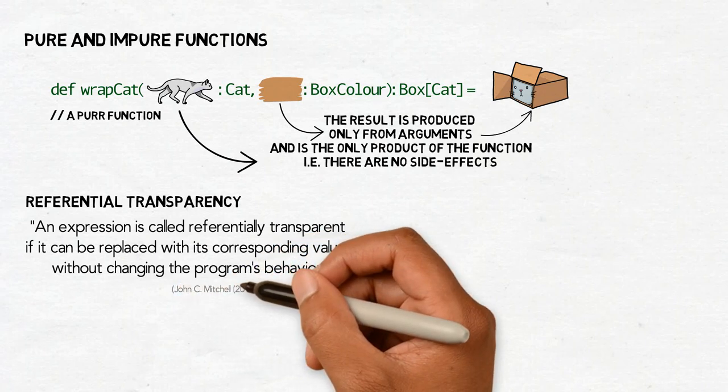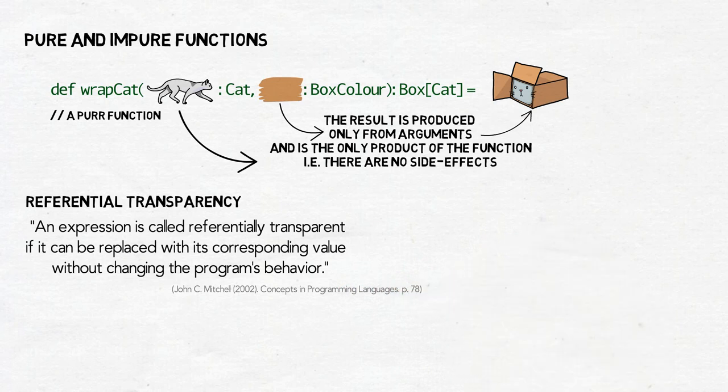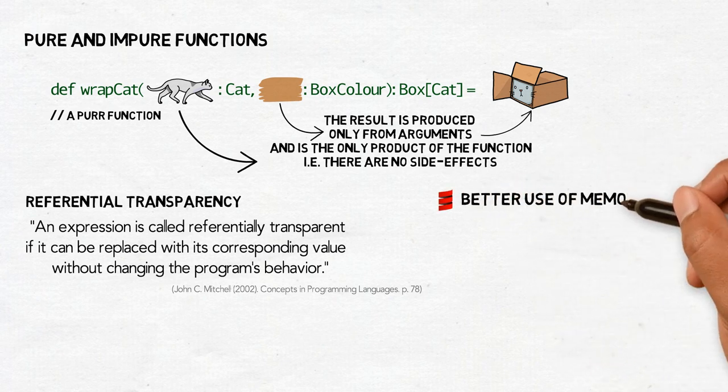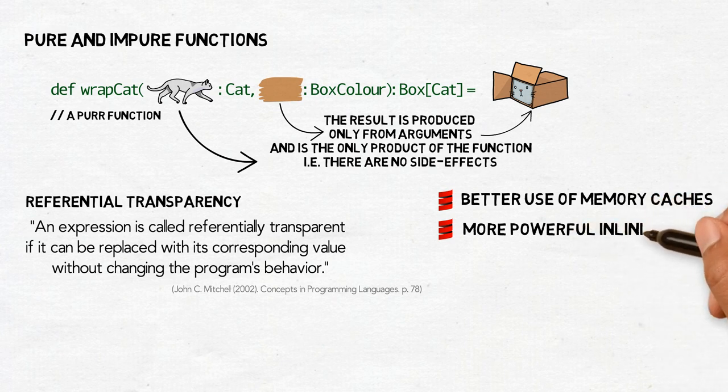If we are sure that an expression always gives the same result for the same arguments, the most common arguments and their results can be saved to some kind of a cache, saving the CPU time that otherwise would have to be spent on calculating the same result over and over again. It also means that the compiler can automatically inline our code, reducing the number of function jumps.